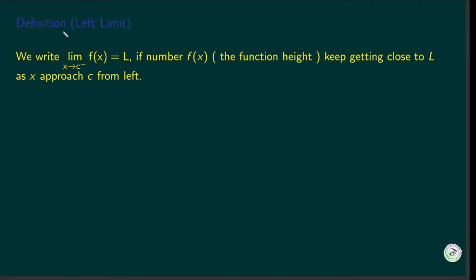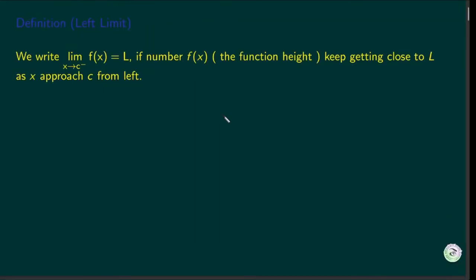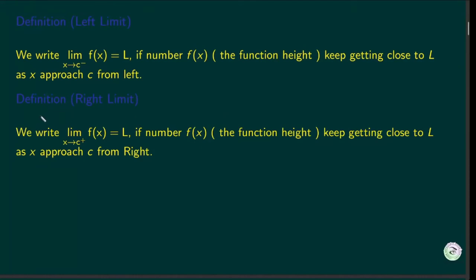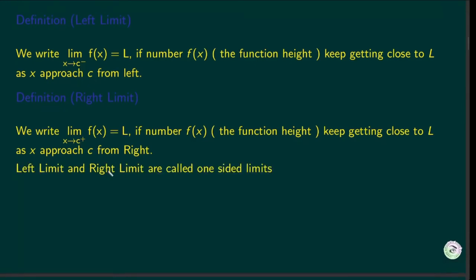Let's summarize the results. Definition — left limit: we write the limit of f(x) as x goes to c from the left equals L, and say that the left limit of f(x) is L, if the function value f(x) keeps getting close to L as x approaches c from the left. Similarly, the right limit of f(x) is L if f(x) keeps getting close to L as x approaches c from the right. We call these one-sided limits.